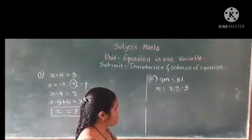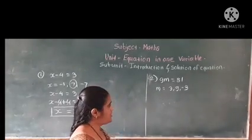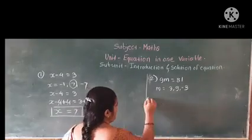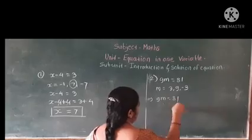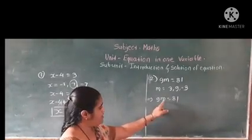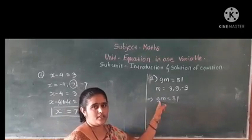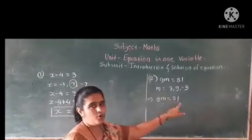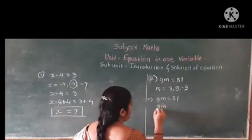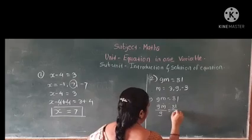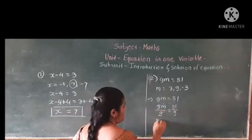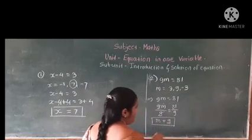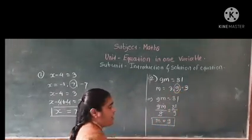Next example: 9m is equal to 81. Options are m equals 3, 9, or minus 3. On the left hand side, 9m means 9 times m — multiplication is present, so we do the opposite operation, which is division. We divide both sides by 9. 9m divided by 9 equals 81 divided by 9. The 9 gets cancelled; only m remains. 81 divided by 9 is 9. So the value of m is 9, and the second option is correct.